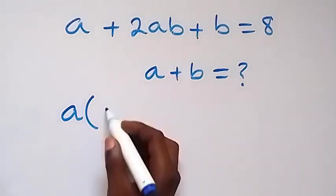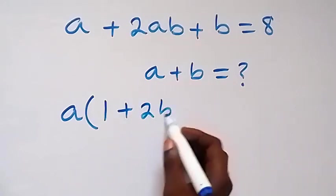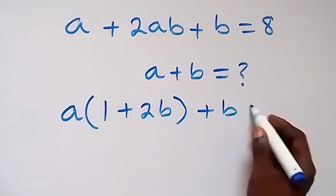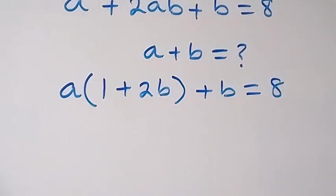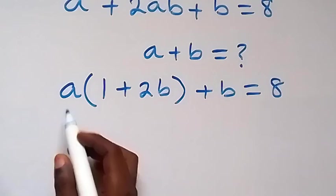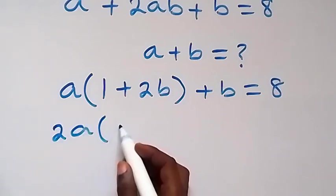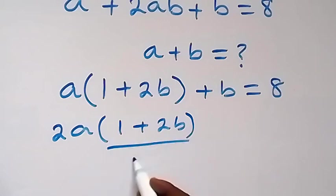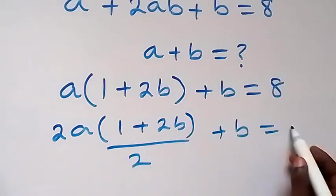Then this is left with a plus 2b on this 2, then close bracket, we have plus b now equals to 8. Then what we have here, we can multiply and divide by 2 here. So this becomes 2a into bracket 1 plus 2b then over 2 plus b equals to 8.